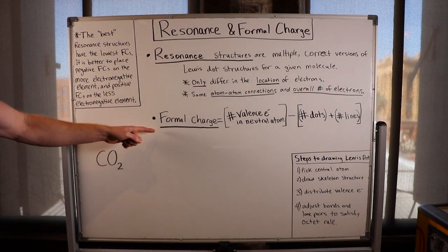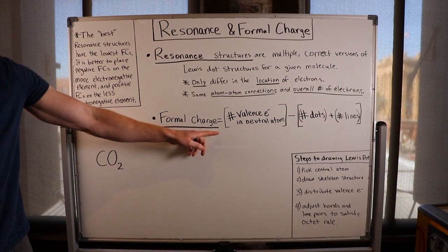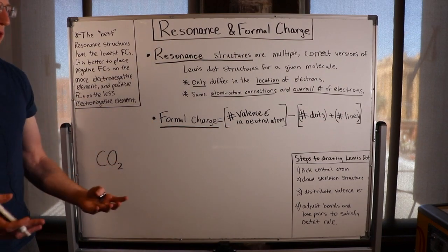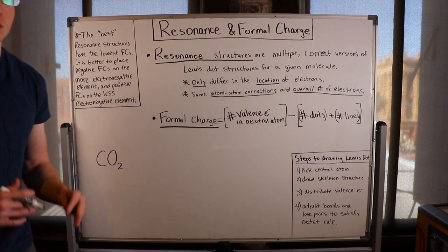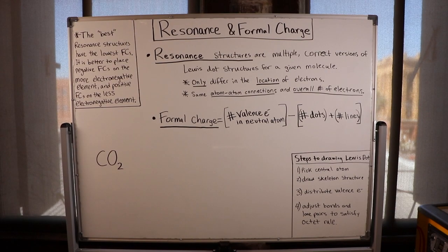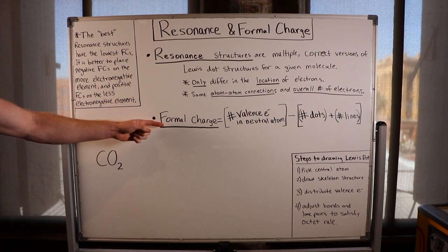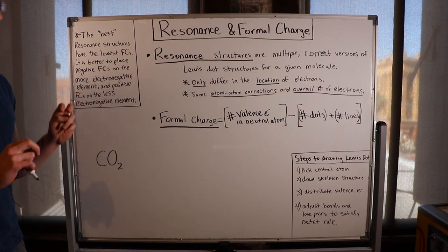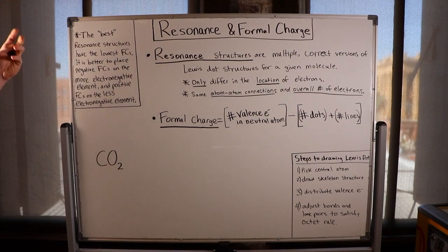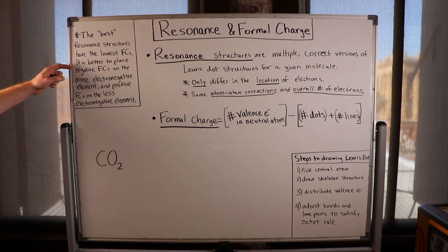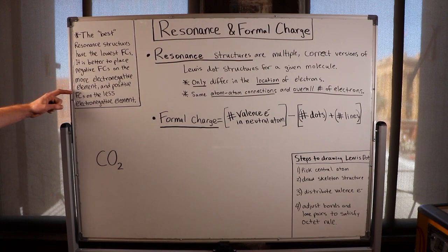Formal charge is simply the number of valence electrons in a neutral atom minus the number of dots plus the number of lines. Formal charge helps us pick the best resonant structure because the best resonant structures have the lowest formal charges. And if we do have to have a formal charge, it's better to place the negative formal charges on the most electronegative elements and the positive formal charges on the least electronegative elements.